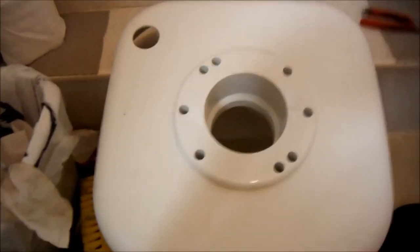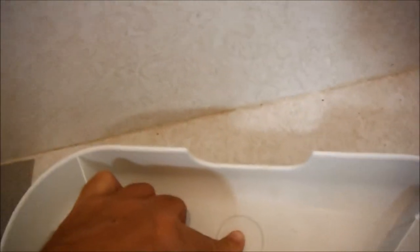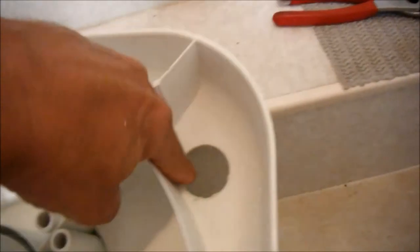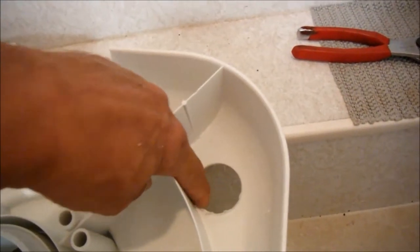This is the riser we got. It came with two possible knockouts for the water supply. One here, I guess for another type of toilet. This one right here I drilled out. This is a one and a half inch. I drilled this one out with a hole saw.